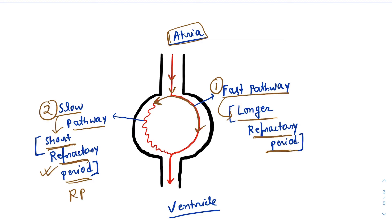When normally an impulse travels up to the AV node, it will run in the fast pathway, and ultimately it will reach the common pathway and go down to excite the ventricle. The impulse will also travel through the slow pathway, but since the pathway is slow, it will travel slowly. By the time it reaches the junction, the fast pathway will be in its refractory period. Since the fast pathway has a longer refractory period, it takes longer time to recover. So the impulse traveling through the slow pathway will find the fast pathway in its refractory period and will get cut off there. This is what happens normally.